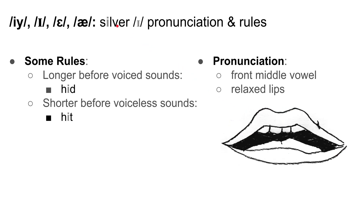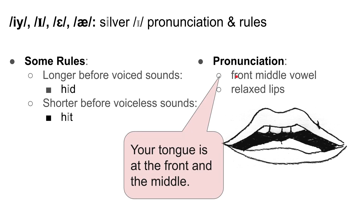Moving forward, we're going to talk about silver E. It tends to be longer before voiced sounds, so 'hid.' If you're wondering what a voiced sound is — when you say B, your throat will vibrate — but it's voiceless, such as P, and your throat doesn't vibrate. That's a discussion for another day, but it's longer before voiced sounds, so 'hid,' and shorter before voiceless sounds, such as 'hit.' For the pronunciation, it's a front middle vowel. Your tongue is at the front and the middle, and we say it with relaxed lips, E.